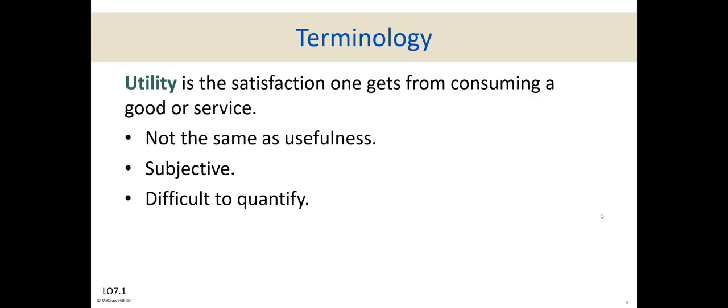Utility is the satisfaction you get from consuming something, and it's totally personal — what satisfies you may not satisfy someone else. For example, you might love chocolate and get a lot of satisfaction from it, but someone who doesn't like chocolate would have a utility of zero. Utility is not the same as usefulness, and it's subjective and difficult to quantify. We use the term 'utils' to represent units of satisfaction.